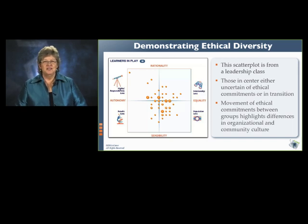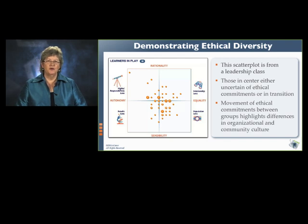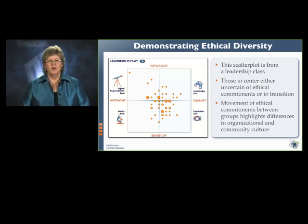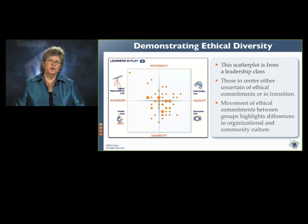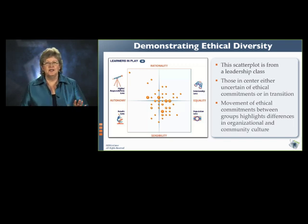The Ethical Lens Inventory is a tool that helps you discover which of the four perspectives is your ethical home and helps you notice that others have different value priorities. If you land in the center, you either are not sure about your ethical preferences or you can move easily into any of the four lenses.